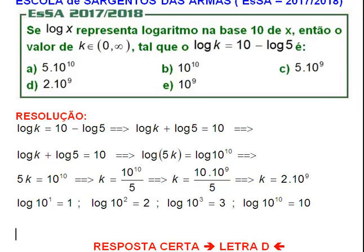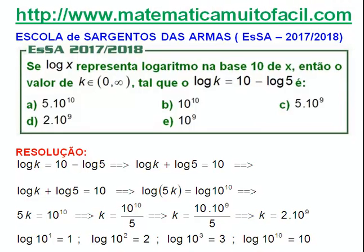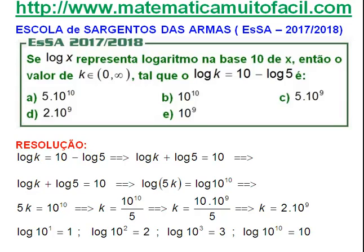A nossa resposta certa é a letra D: 2 vezes 10 elevado à nona. E com isso resolvemos mais uma questão — uma questão simples, praticamente uma aplicação de fórmula. A gente raciocinou um pouquinho, pensou e tal, para enxergar a nossa resposta correta.